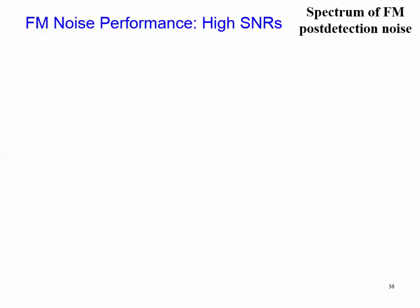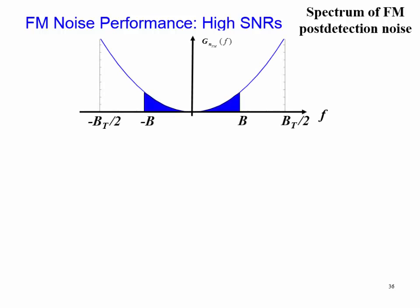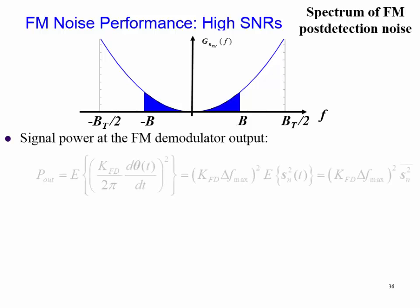We saw that our power spectral density of our FM signal consists of a post-detection noise having a parabolic shape, which goes from minus B to B when we integrate the amount of power. That's what we're going to do, is figuring out the power of our first signal, and then noise power at the FM demodulated output.